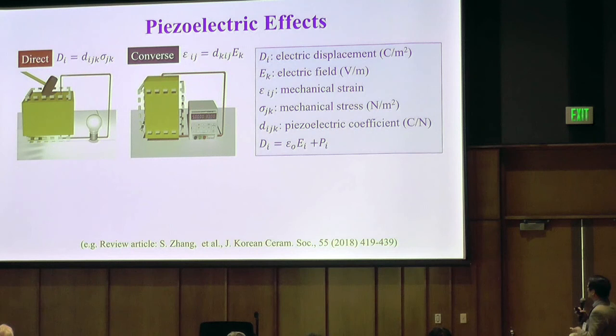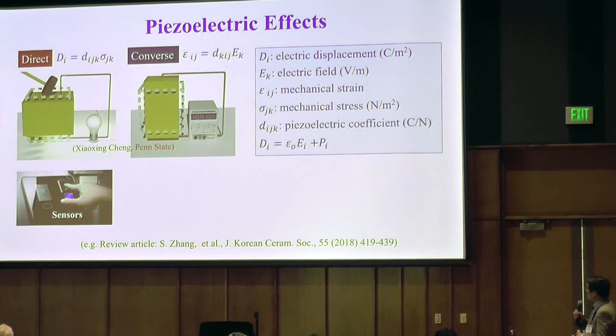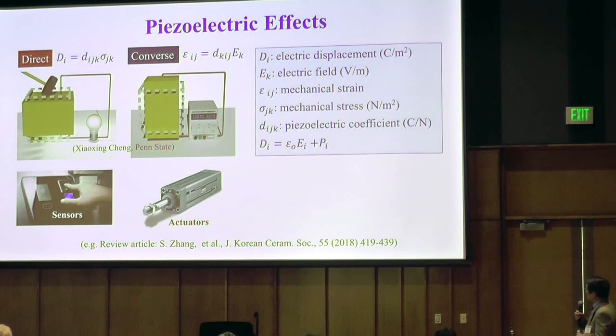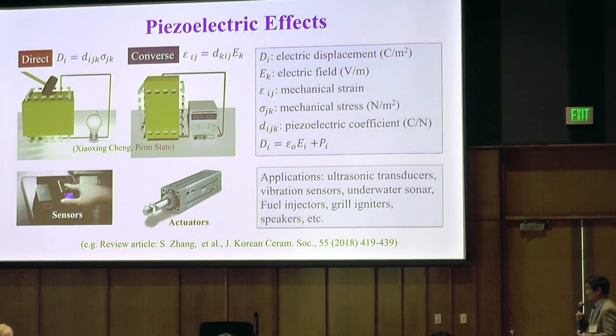You can also do the converse effect: when you apply an electrical field, you produce mechanical strain or shape change. This is a third-rank tensor connecting a second-rank tensor and a vector. Because of this effect, mechanical force producing electrical signal can be utilized for sensor applications, and the converse effect can be used for actuators — from ultrasonic transducers to underwater sonar. Certainly, for many of these applications, the bigger the piezoelectric effect, the better.